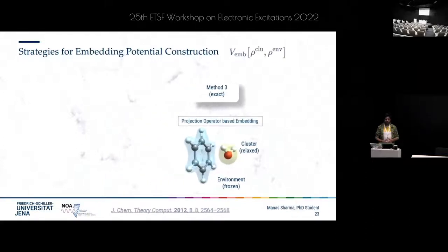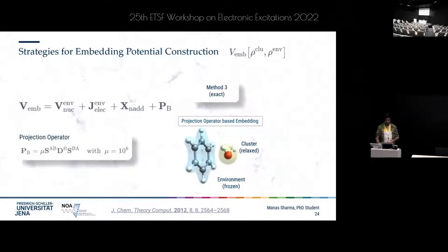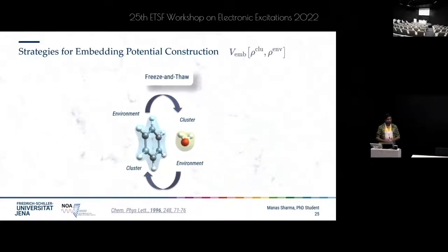Method 3 is basically the same as Method 1; however, the need for approximate kinetic energy density functionals is circumvented by employing projection operators that orthogonalize the orbitals of the cluster and environment subsystems with respect to each other. A freeze-and-thaw procedure may be performed where the roles of environment and cluster are interchanged iteratively until densities converge. To summarize: Methods 1 and 2 are suitable for weakly interacting systems, while Method 3 is suitable for strongly interacting systems or those with covalent bonds.